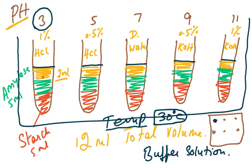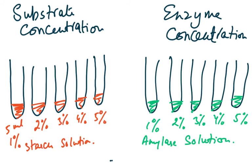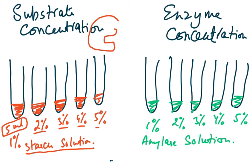To study the effect of substrate concentration, we take five test tubes and change the starch concentration — 1%, 2%, 3%, 4%, and 5% — while keeping the volume the same. The enzyme concentration remains constant, representing the same number of active sites, while we change the substrate amount. Any set of percentages can be used; the key is varying substrate concentration while keeping everything else constant.